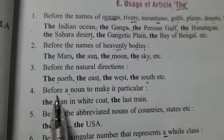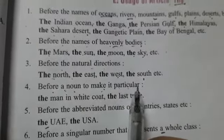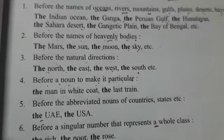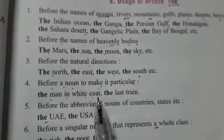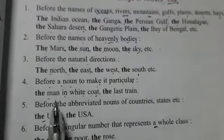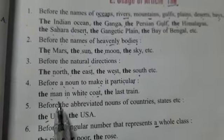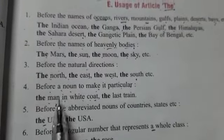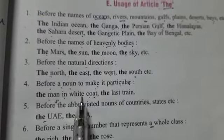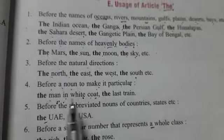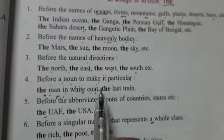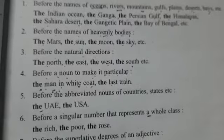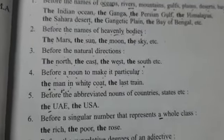Next, before a noun to make it particular. Us noun ke saath jis ko hummne particular banana ho. For example, 'the man in white coat' — agar hum generally man ke baare mein baat kertey, toh man hi kehna tha. Lekin yaha hummne particular man ke baare mein baat ki. So we will use 'the' here. The man in white coat. The last train — we are not talking generally about a train, we are talking about the last train.